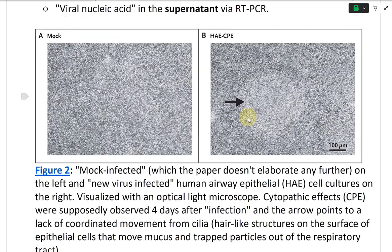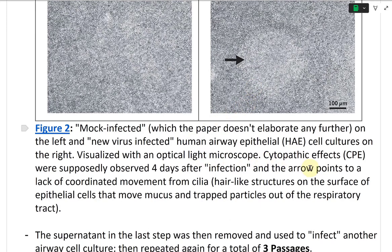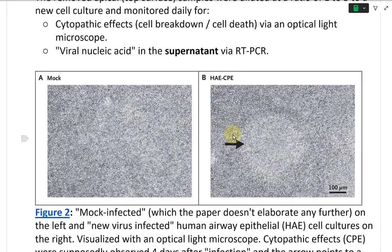Figure two shows mock-infected cells on the left and new virus-infected human airway epithelial (HAE) cell cultures on the right, visualized with an optical light microscope. Cytopathic effects (CPE) were supposedly observed four days after infection. The arrow points to a lack of coordinated movement from cilia — hair-like structures on the surface of epithelial cells that move mucus and trapped particles out of the respiratory tract — supposedly indicating CPE.